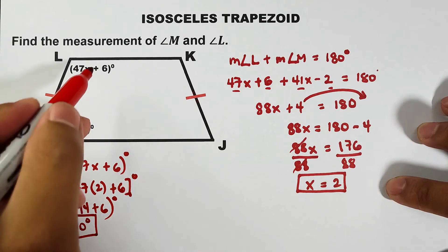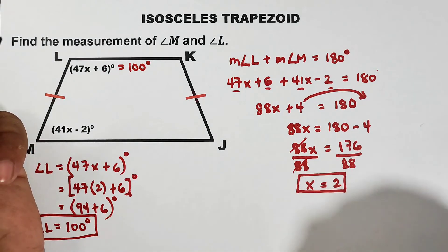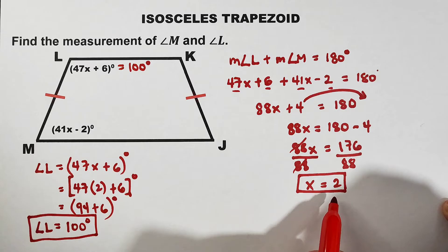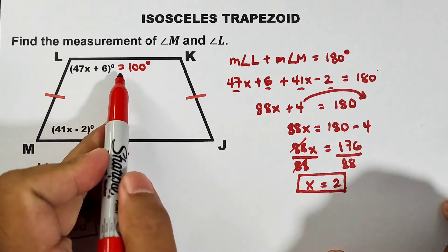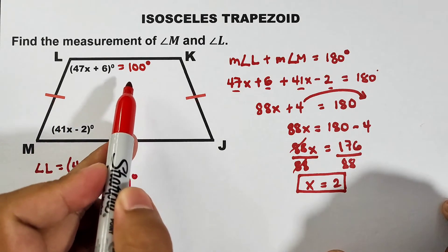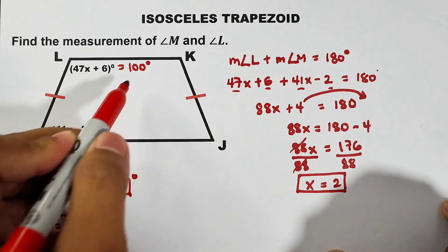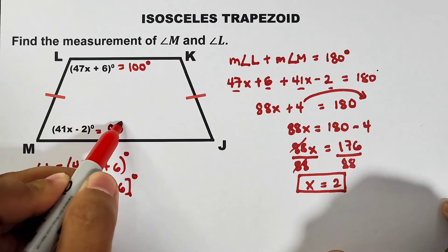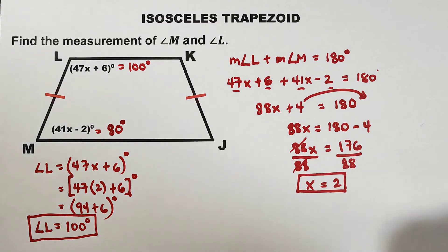your angle L simply measures 100 degrees. Now, do we need to substitute x again to find angle M? The quickest approach is to remember that these two angles are supplementary — their sum equals 180 degrees. If angle L is 100 degrees, then angle M is equal to 80 degrees.